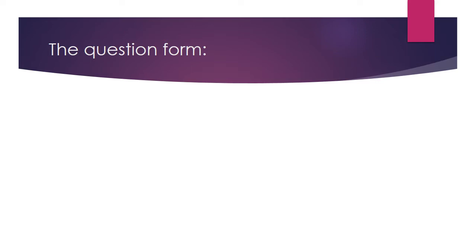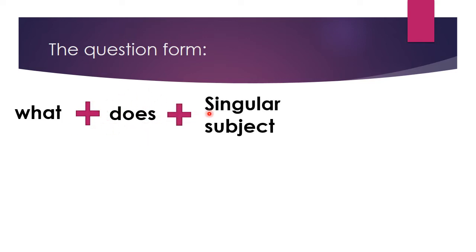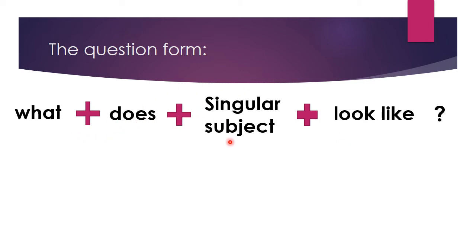The question form of 'look like': we start the question with 'what,' ومن ثم يأتي بعده 'does' — we use 'does' لأن الفاعل يكون singular subject. ومن ثم يأتي 'look like.' بدنا ننتبه — we don't add 's' to the verb 'look' in the question.